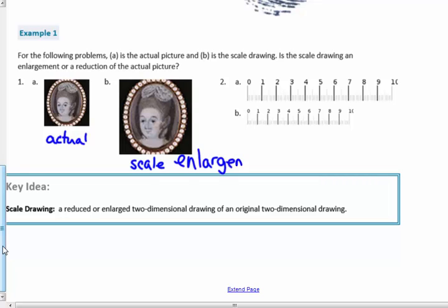And number two, A is the actual, this is the actual, and B is the scale drawing. So you can see that this ruler or measurement system, whatever it is, has been shrunk down. So this is a reduction. So we're going to talk about enlarging and reducing things, which in eighth grade, this will look like dilation, transforming ideas called dilation.